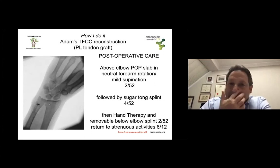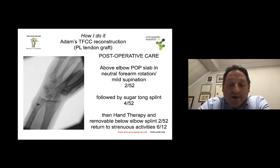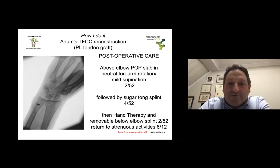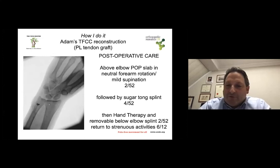Postoperatively, it's paramount to protect the TFCC whether you have repaired or reconstructed it. An above-elbow plaster slab with neutral forearm rotation or mild supination can be applied for two weeks. Remember to use sugar tongue splints because it allows the patient to flex and extend the elbow to avoid elbow stiffness without pronating and supinating the forearm. You can also ask the therapist and patient to consider some wrist flexion and extension out of the splint, but you must be absolutely sure the patient would not pronate or supinate the forearm.